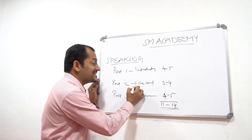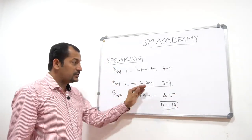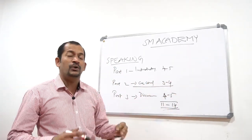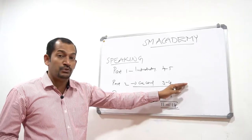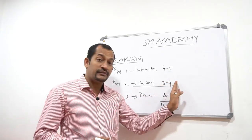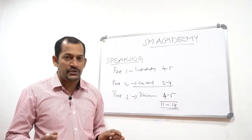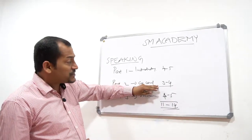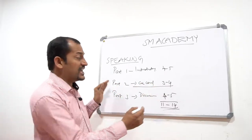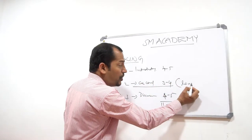Gradually, you reach the second session, the cue card round. In the cue card, you will be given a topic about which you need to speak for at least 2 minutes, and you will be given 1 minute of time to prepare. You will be given a white paper, a full sheet along with a pencil for preparation. Let me explain this round in detail, which can also be called as long turn.